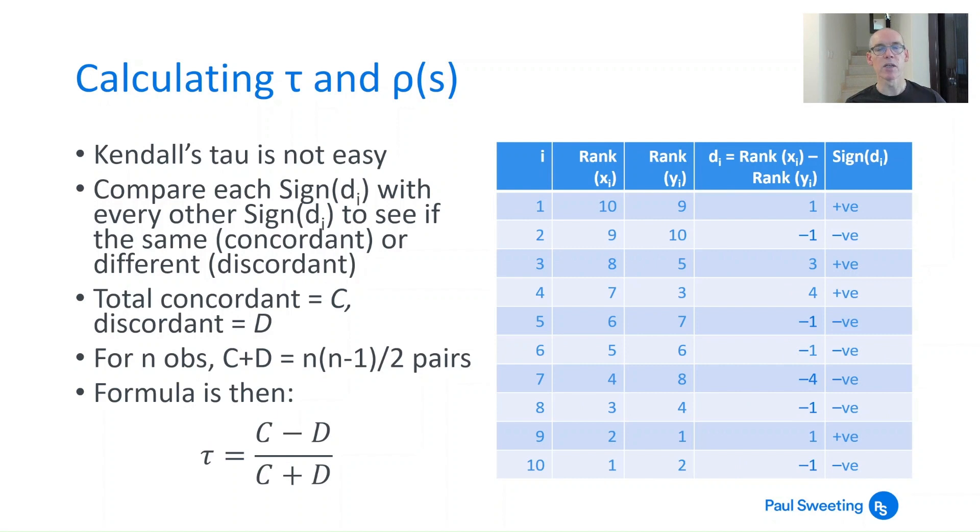Kendall's tau is not easy. Conceptually it's easy, but it is a pain in the neck to calculate because you need to have lots of data items. Because it's a rank correlation coefficient, you start with the ranks. In columns 2 and 3 here, we've got the ranks for X and Y, and we've got the differences there in the next column. Then what you need to say is, is the difference between those positive or negative in each case?